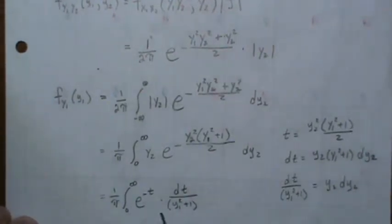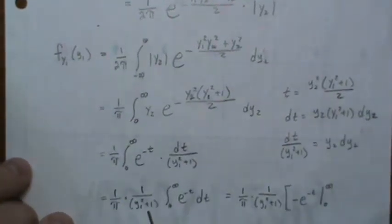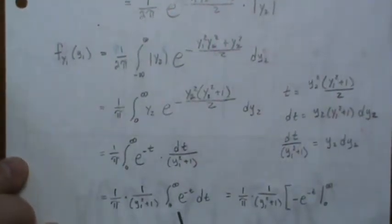Plug in the information, we get this. Now, the y1 squared plus one is constant in the t world, so it can come out front, which we do, and we're just left with this integral.